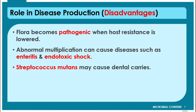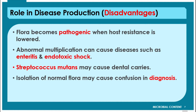Some normal flora like Streptococcus mutans may cause dental caries — they are responsible for dental caries. Additionally, isolation of normal flora may cause confusion in diagnosis, because when you collect a clinical specimen along with pathogenic bacteria, normal flora also gets isolated, and you may confuse whether you have isolated normal flora or the pathogenic organism.